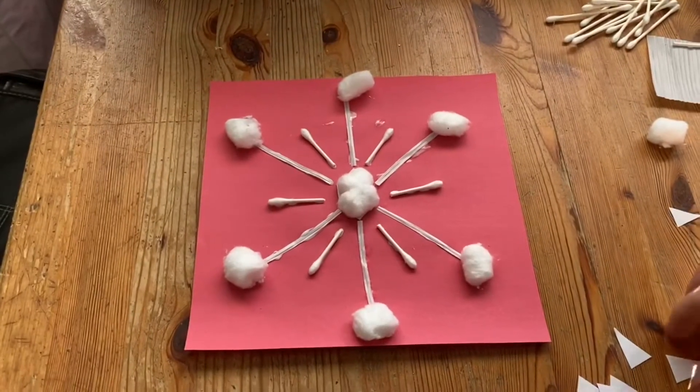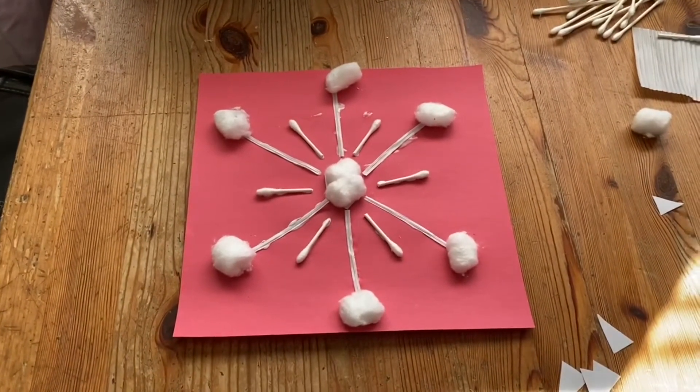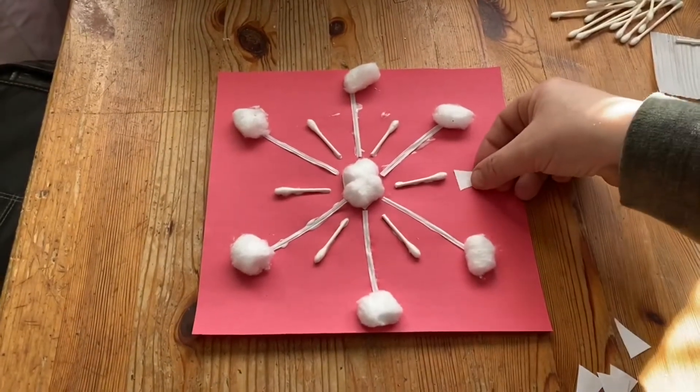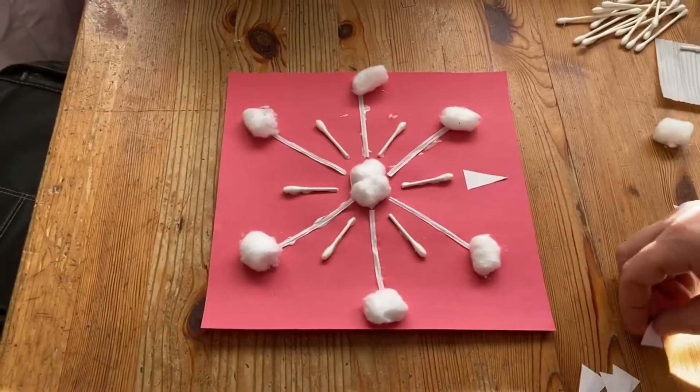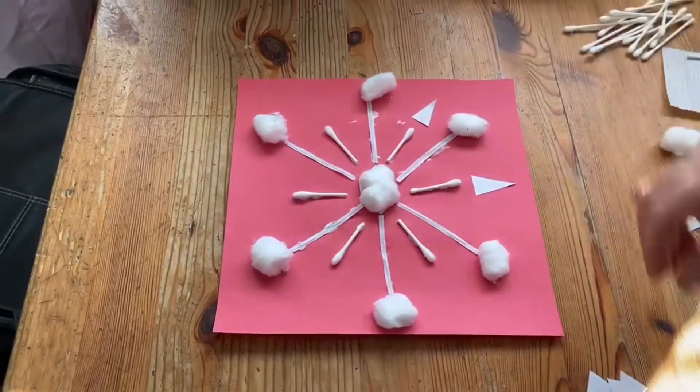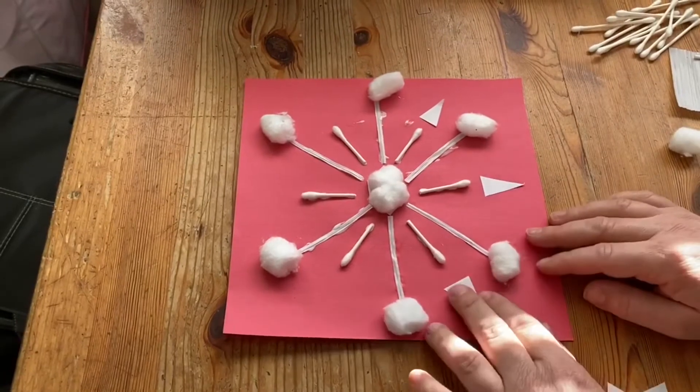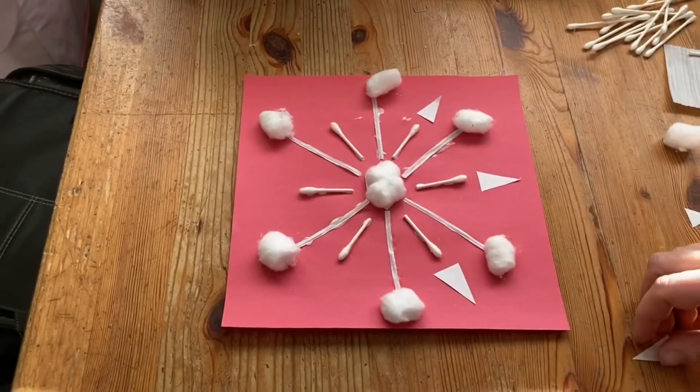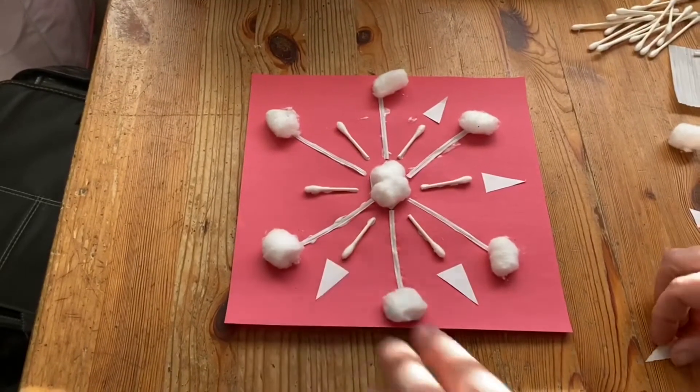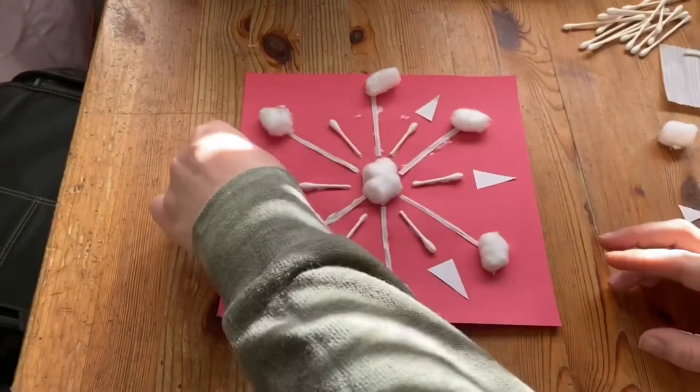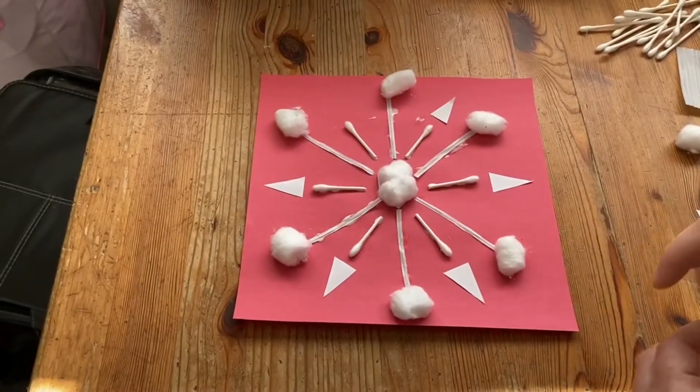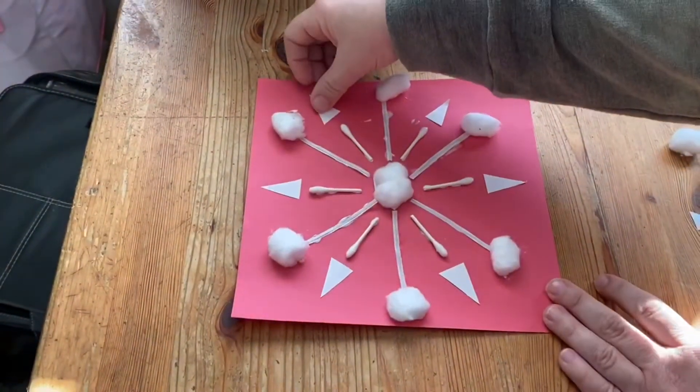I thought about just leaving my snowflake as is, but then I decided that I wanted to add in just one more element, and that is triangles. I have these little triangles that I've cut out from just regular pieces of white paper. And I'm going to put them right here above my q-tips. And then we will have a very interesting and completed snowflake that is symmetrical.